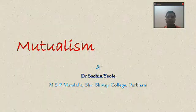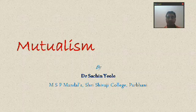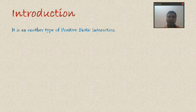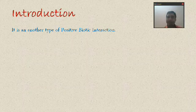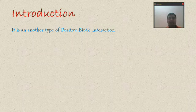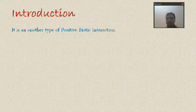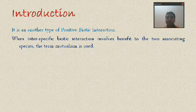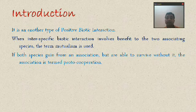Welcome friends. Today we are going to discuss mutualism. In the previous lecture we discussed commensalism, which is a type of positive biotic interaction in which one species gets benefit whereas another one is not getting benefit or harm. If both species are getting benefits, it is called mutualism. If that mutualistic association is not mandatory, it is called proto-cooperation.